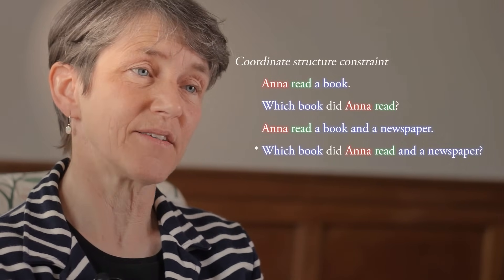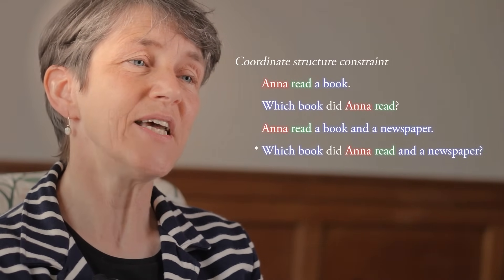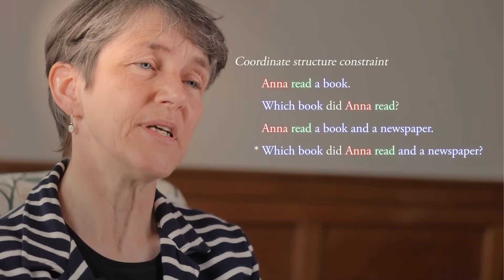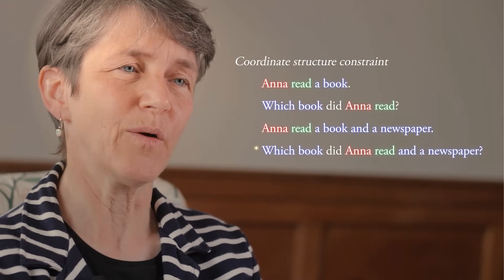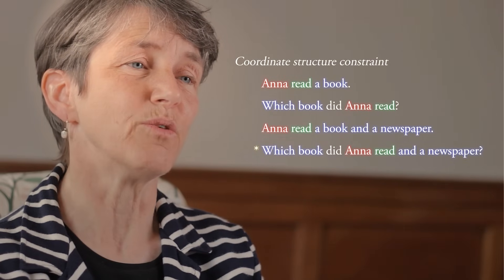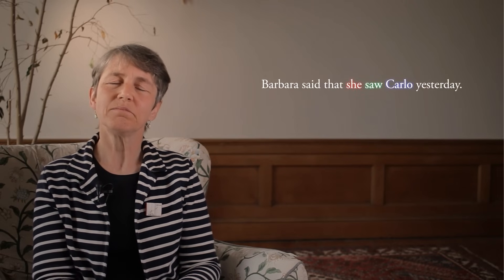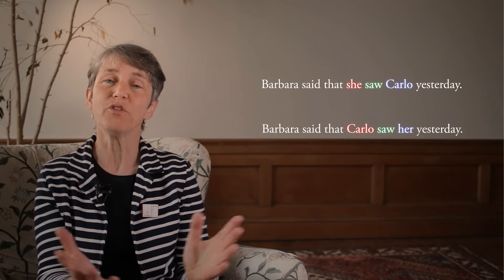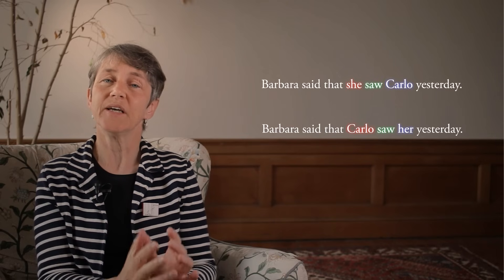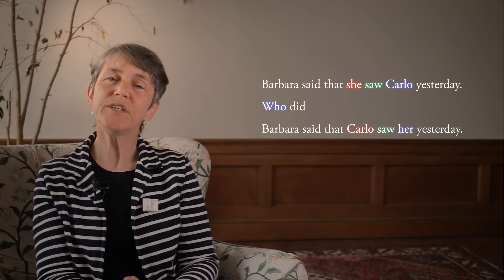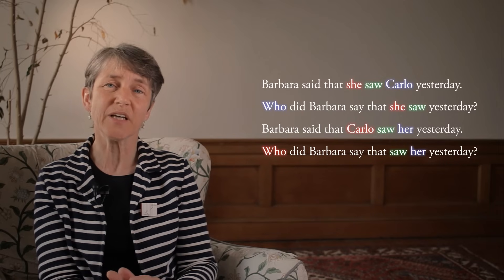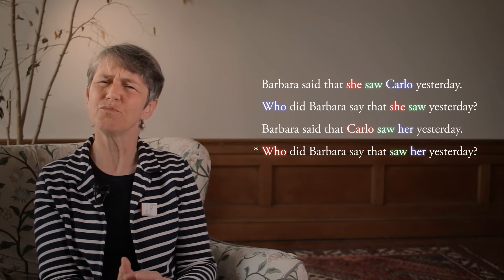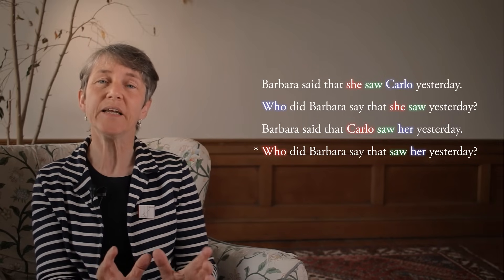When writing such ungrammatical examples, the typical representation to indicate that something is syntactically ill-formed is to preface it with an asterisk. We put an asterisk at the beginning of a sentence to indicate that it is an impossible sentence within a language — and impossible for syntactic reasons. To take another example: we can say 'Barbara said that she saw Carlo yesterday' and 'Barbara said that Carlo saw her yesterday' — both possible sentences. We can question such a sentence: 'who did Barbara say that she saw yesterday?' is fine. But 'who did Barbara say that saw her yesterday?' is, for many speakers of English, not possible.